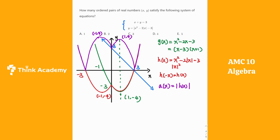Now we have the graphs of both functions. We can see there is 1 intersection on the left side, 2 intercepts in the middle area, and another one when we extend the line — giving 3 intersections in total. This means there are 3 ordered pairs that satisfy both equations in the system, so the answer is 3.